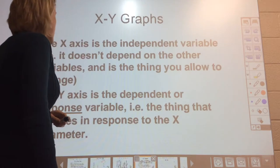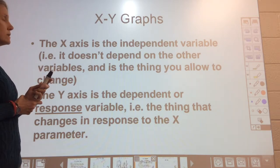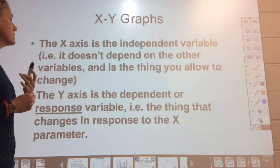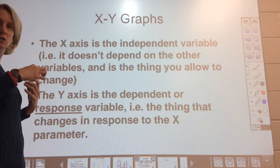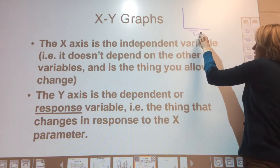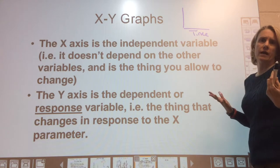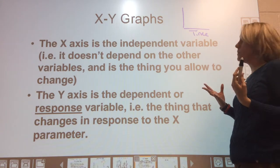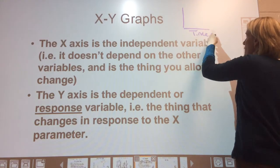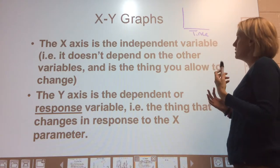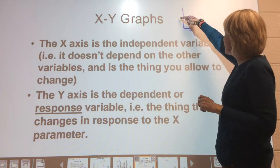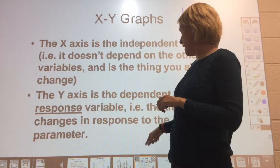We're going to start by looking at XY graphs. On XY graphs, the x-axis is the independent variable — the thing you're allowing to change that doesn't depend on other variables. A helpful reminder: time always goes on the x-axis and is always independent. The y-axis is the dependent or response variable — what's changing in response to the x parameter.